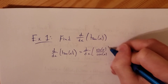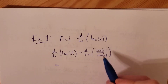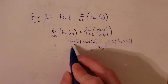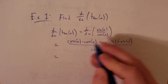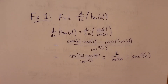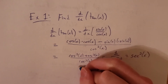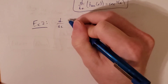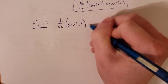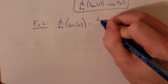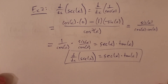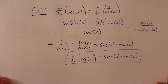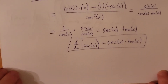We still have the minus sine of x here, all over h. Let's move terms together and factor out sine of x from the first and third terms, so we're left with sine of x times the quantity cosine of h minus one, plus cosine of x times sine of h, all over h.